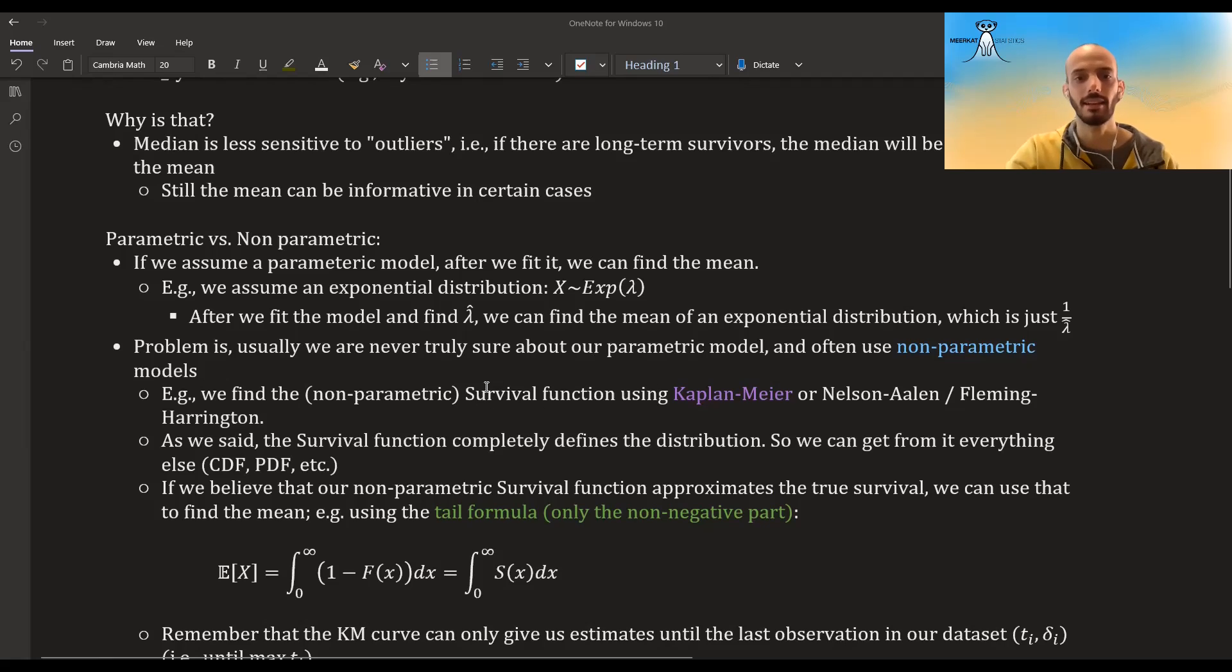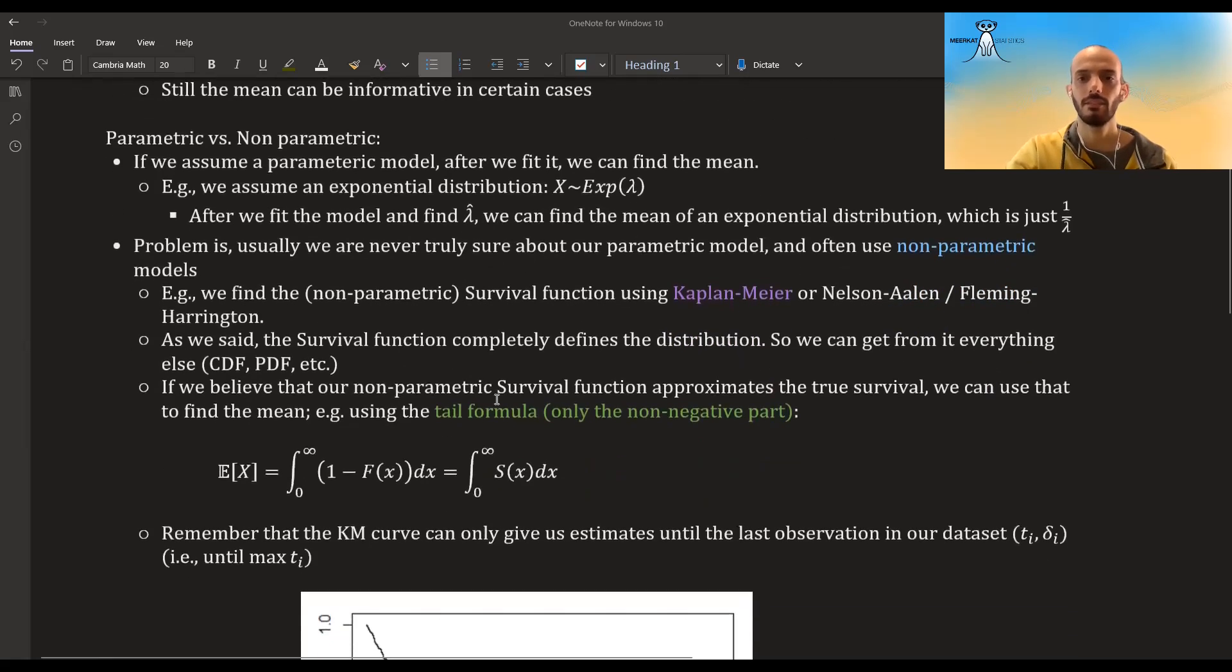For example, we estimate a survival function using a Kaplan-Meier non-parametric estimation. If we have the survival function, we said that the survival function completely describes the distribution - the survival is just one minus the CDF. So if you have the survival, you have the CDF, you have the PDF, and you can get the mean no problem.